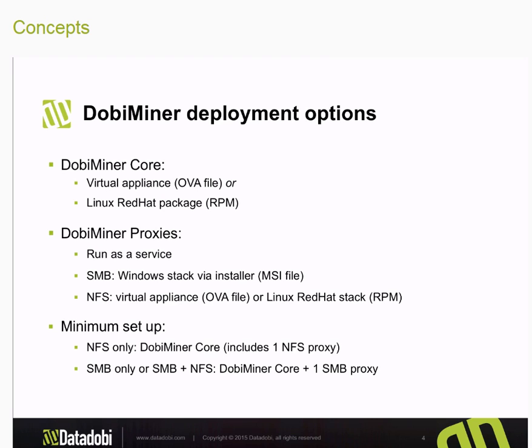As far as a minimum setup, you always have to have Dolby Miner core — that's a requirement — and then you have to have at least one flavor of proxy, either SMB or NFS.